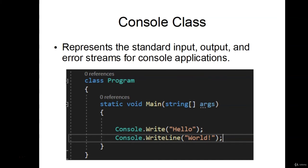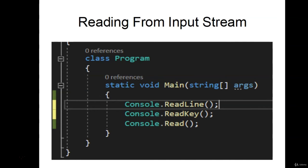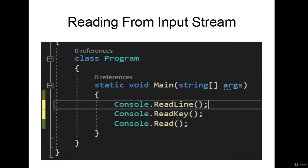In this video we're going to talk about the Console class. The Console class represents the standard input, output, and error streams for console applications. We've seen this before — we use Console.Write and Console.WriteLine to print something to the console. We've also worked with reading streams: ReadLine, Read, and ReadKey — all ways to read user input. Previously we used Read and ReadLine just to keep the console open, but now we want to focus on using these methods to get information from the user and then do something with that information.